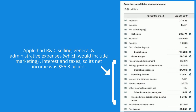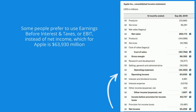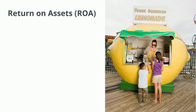Back to Apple — Apple had R&D, selling, general and administrative expenses, including marketing, interest, and taxes. Its net income was $55.3 billion. $55.3 over $260.2 equals 21.3% net margin. Some people prefer to use earnings before interest and taxes, or EBIT, instead of net income — it depends on your views about the role of interest and taxes in strategy. Using EBIT, Apple's net margin comes out to 24.6%.